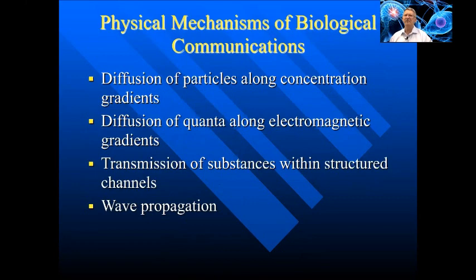Hewitt described four physical mechanisms of biological communication. The first is diffusion of particles along concentration gradients, such as osmotic exchange. The second is diffusion of quanta along electromagnetic gradients. This would include electrophysiologic phenomena, such as ECG, EMG, EEG, and so forth.